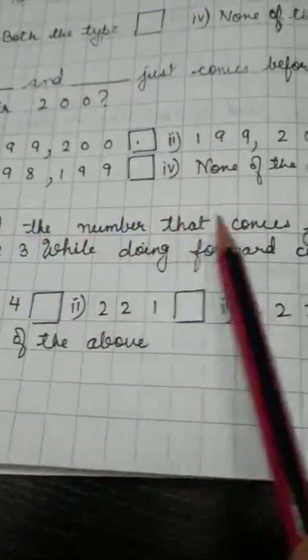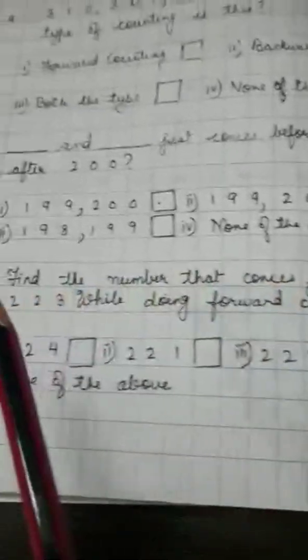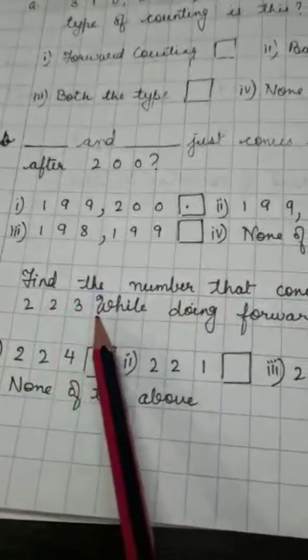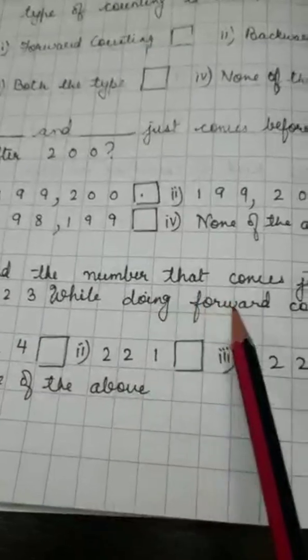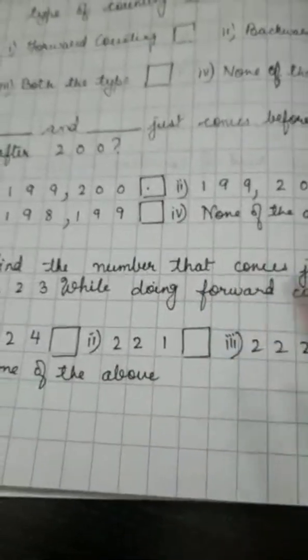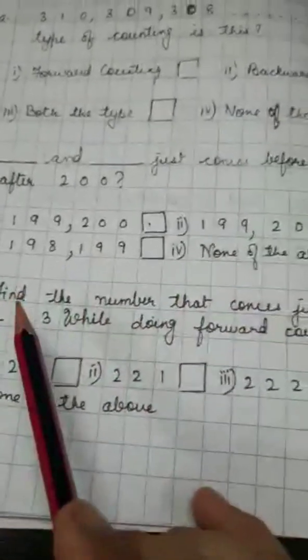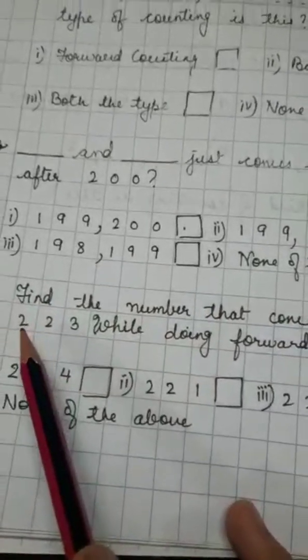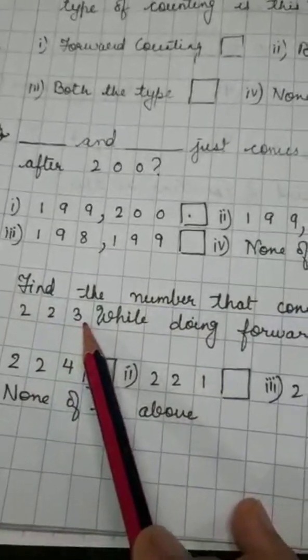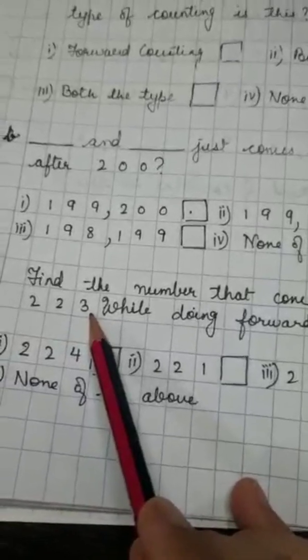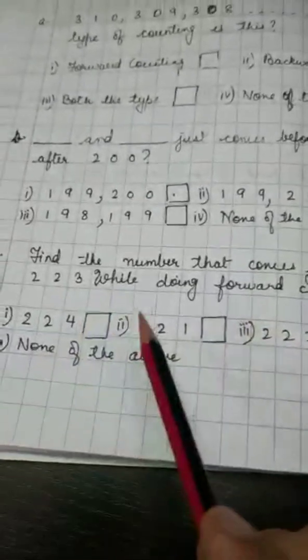Now, find the number that comes just before 223 while doing forward counting. Means, jab am log forward counting kar hai hai, which number comes just before 223, okay? I know, you must be knowing it. So, you will choose the correct option and you will put a tick over there, okay?